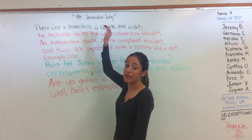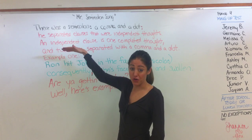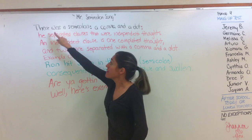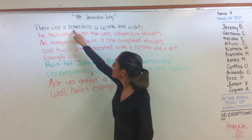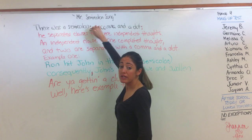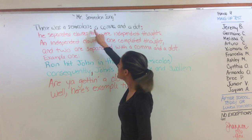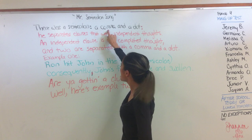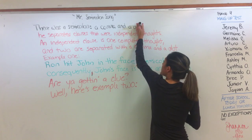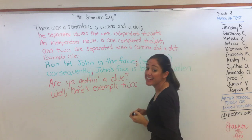On page four, write the first line: 'There was a semi-colon' — semi-colon is one word. Then put a colon, because I'm about to list what a semi-colon is. So put two dots after it. Then write a comma and a dot — that's the semicolon symbol itself, a comma and a dot.